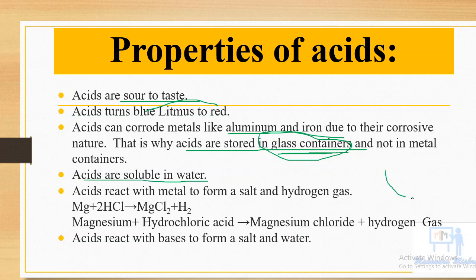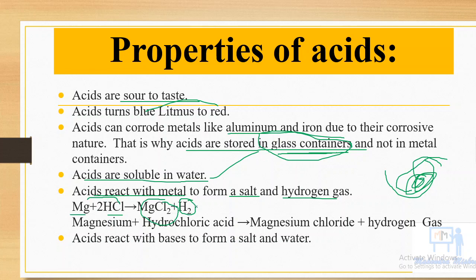Next property: acids are soluble in water — if you mix acid and water in a container, they will dissolve together. Another very important property is that acids react with metals to form salt and hydrogen gas. For example, HCl reacts with magnesium (Mg) to produce MgCl2 (salt) and H2 (hydrogen gas). Acids also react with bases to form salt and water.